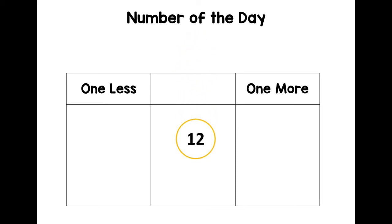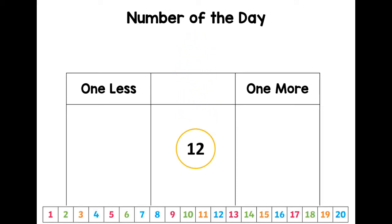So there's 12 and here's our number track. And remember, you can use the number track to help you find the numbers that are one more and one less than 12. So you find 12 and you do a jump down and you do a jump up. And that is the one less over here and one more. So if I make the number track disappear, are you ready?